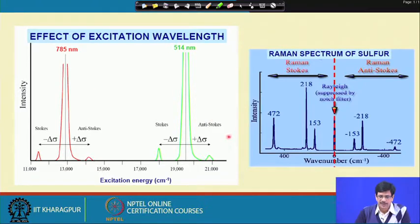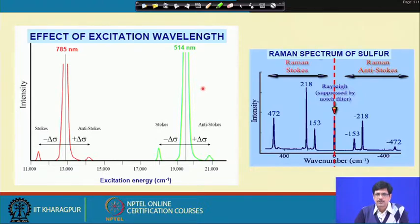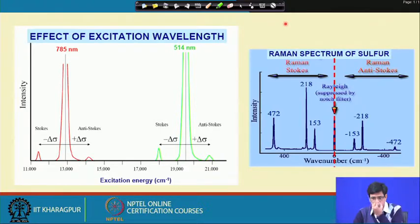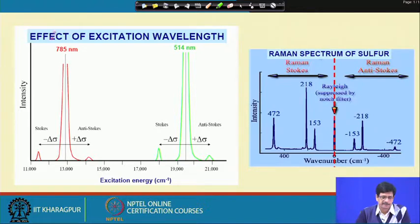Before proceeding further, it is essential to know that when attempting to understand the principles of Raman scattering through the interaction of electromagnetic energy with vibrating bonds in a molecule, it has to be a single wavelength of light — a monochromatic light. We use either an argon ion laser, generally available at 514 or 520 nanometers in the visible green part of the spectrum.